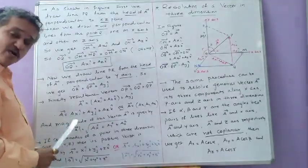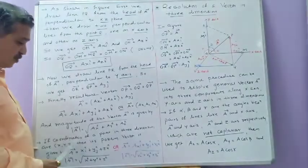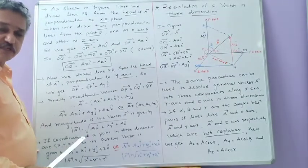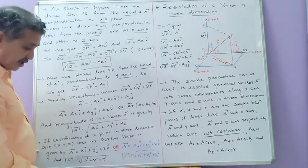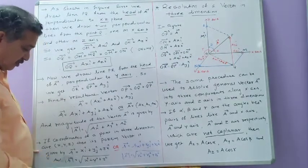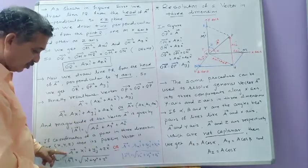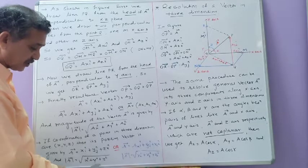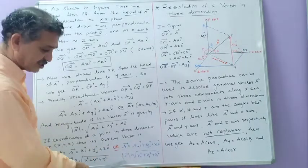The same argument applies to the position vector of a point in three dimensions. If the coordinates of a point in three dimensions are (X, Y, Z), then its position vector is given by vector R equals X times unit vector i plus Y times unit vector j plus Z times unit vector k — or written in bracket notation as (X, Y, Z). The magnitude of this position vector equals the square root of X² plus Y² plus Z².